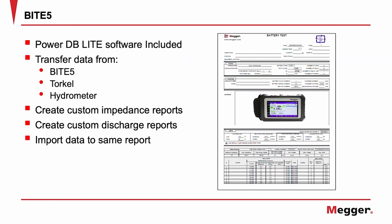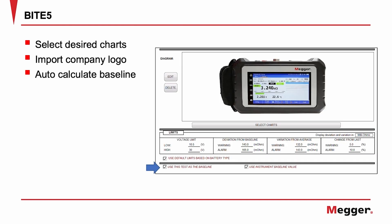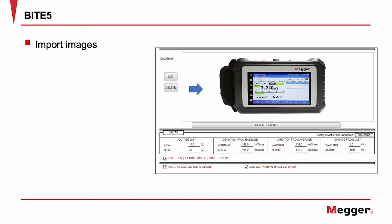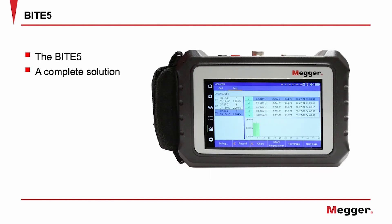Create custom impedance reports and custom discharge reports. Select desired charts and import company logos. The software will auto-calculate the baseline value for each string and auto-calculate the battery limits based on the cell chemistry. PowerDB also allows you to import images into your report, export your report as a PDF file, and export the data to a CSV file. The Byte 5 — whatever type of battery, whatever type of testing you need to do, the Byte 5 will do it.